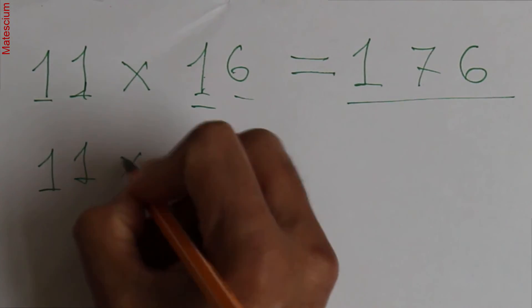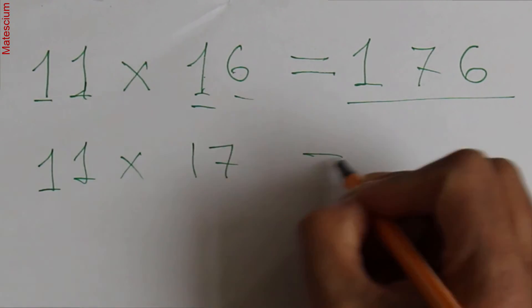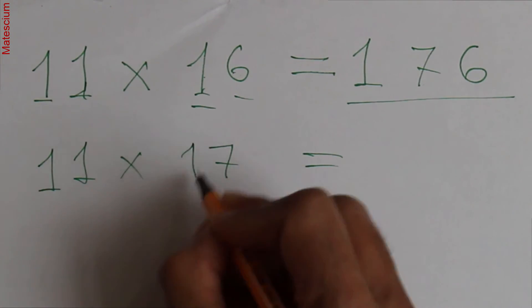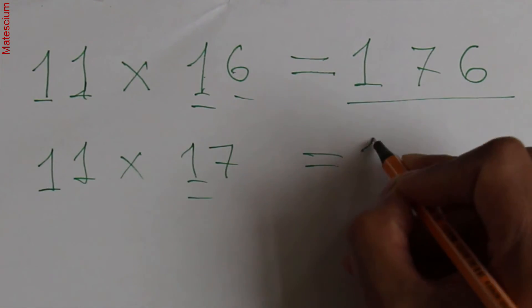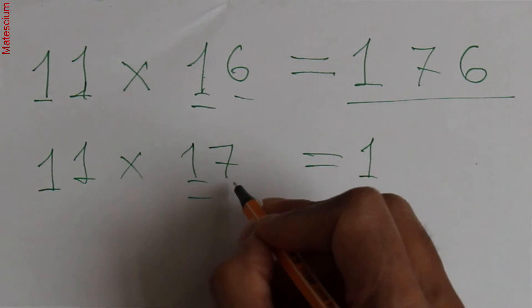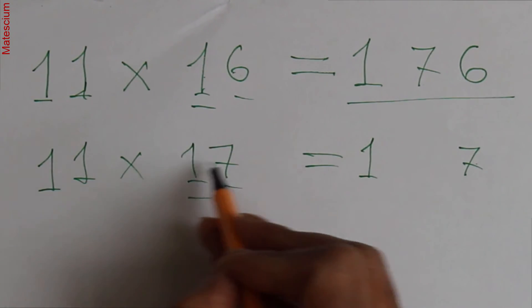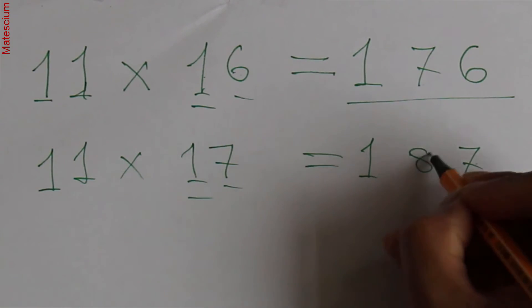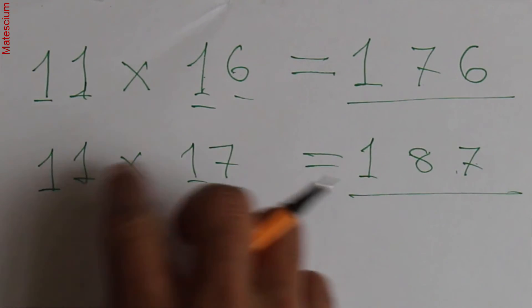Let's say 11 times 17. So apply the same thing here. Write this 1 on one hand side, keep some certain distance, and write this 7 on another hand side. And add these 2 digits. 7 plus 1 is 8. Yes, 187 is the answer of 11 times 17.